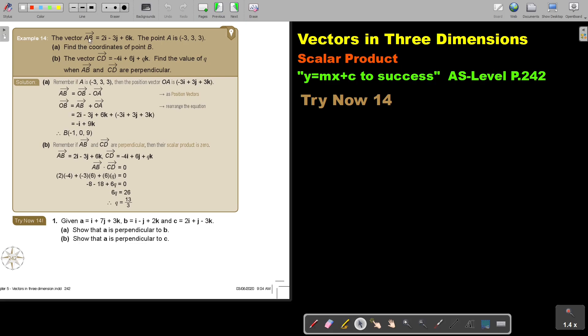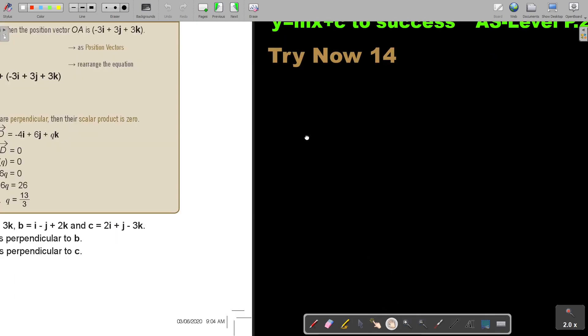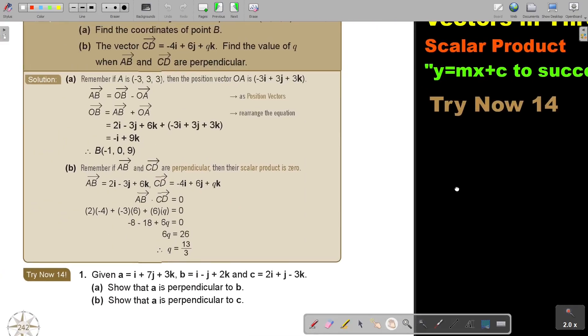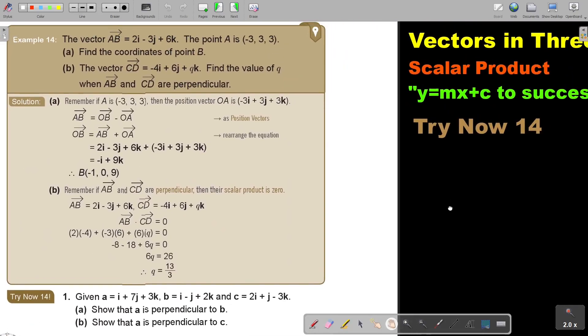The vector AB is this. The point A is this. Find the coordinates of the point B. Now, we're going to make use of position vectors. So, let's do that.